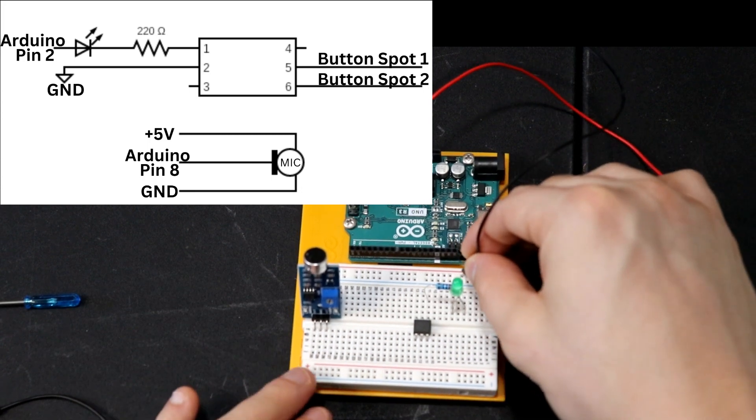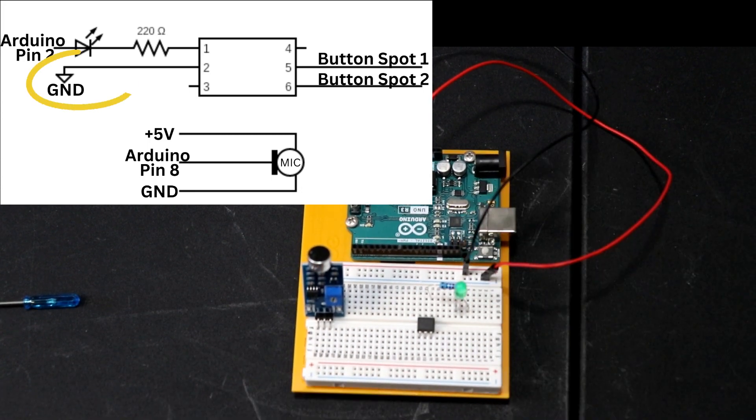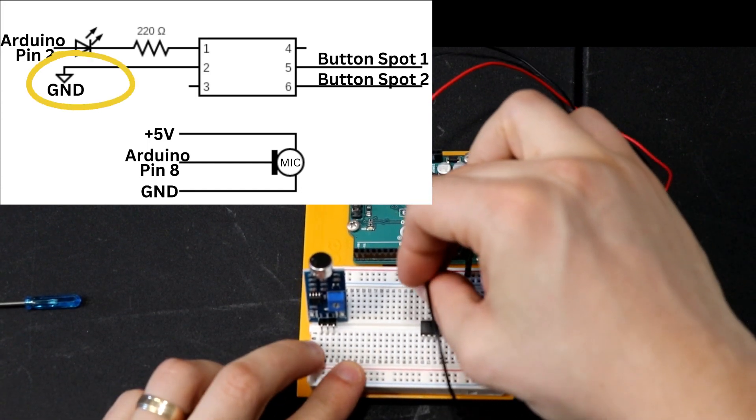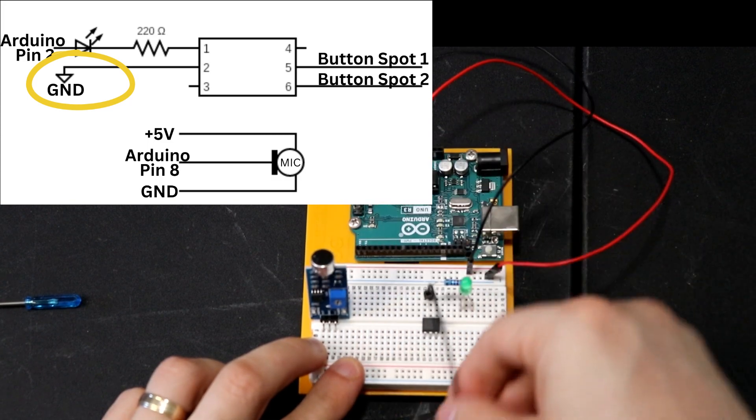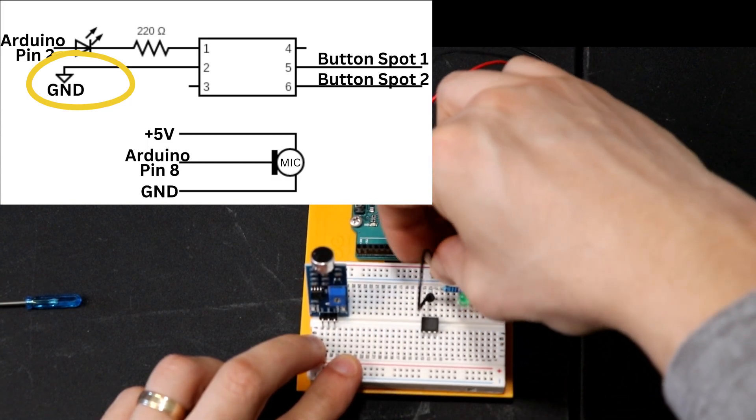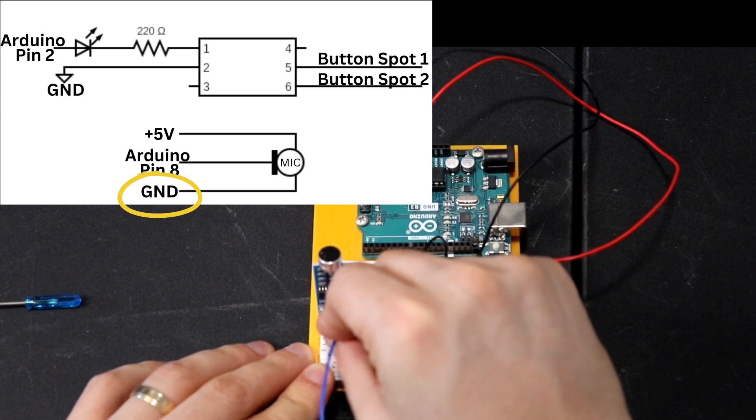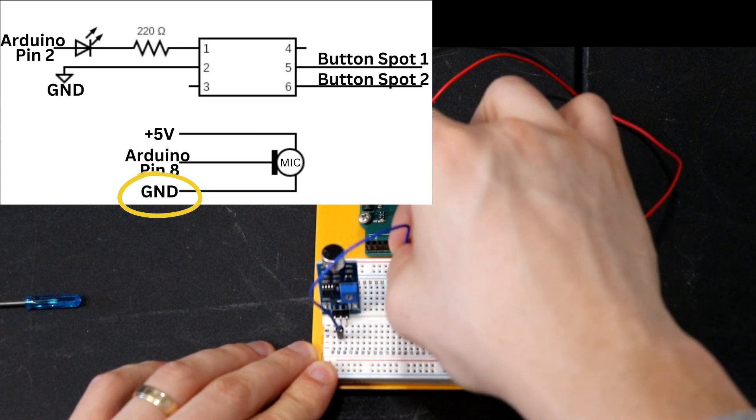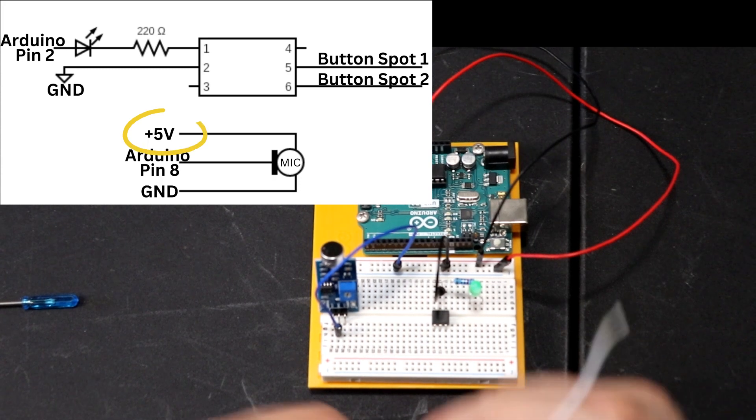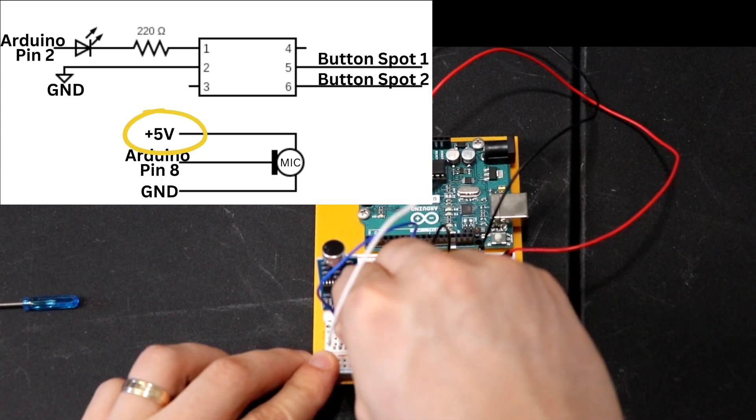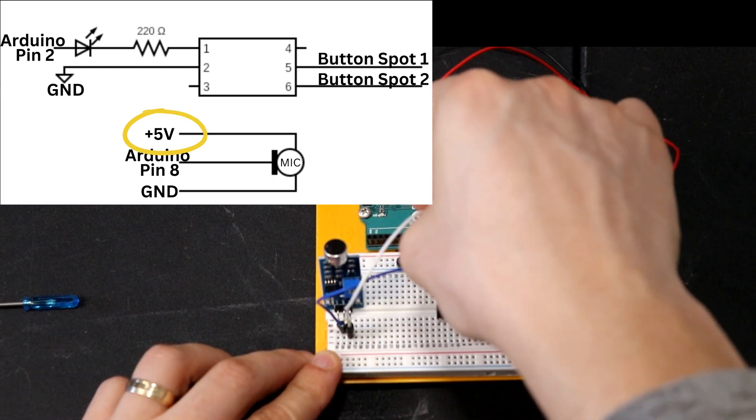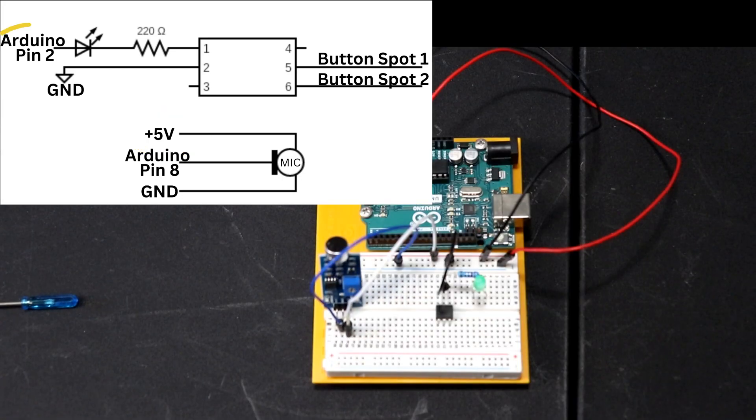I'm going to start by bringing ground over to this first power rail, and then I'm going to put power on the power rail right next to our ground, the positive row. I'm going to connect pin 2 of the octocoupler to ground, and now I'm going to connect the ground pin of our microphone's noise detector to ground as well.